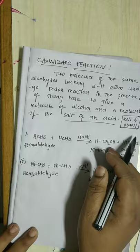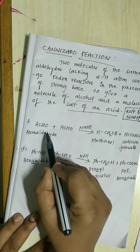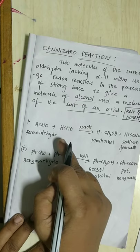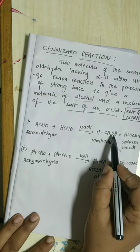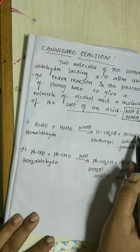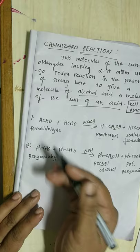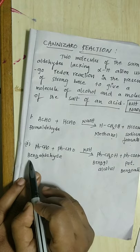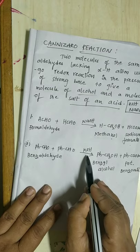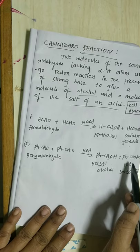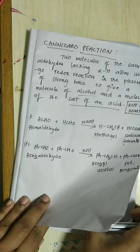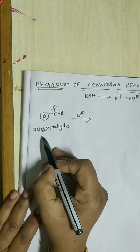Let us see the examples. One is formaldehyde — two formaldehyde molecules both react with each other in the presence of sodium hydroxide to form one alcohol, that is methanol, and one salt of an acid, that is sodium formate. This is benzaldehyde. Two benzaldehyde molecules react with each other in the presence of potassium hydroxide to form benzyl alcohol and potassium benzoate. This is the Cannizzaro reaction.